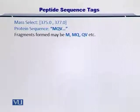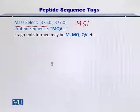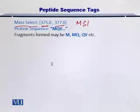Let's look at this example to better understand the peptide sequence tag concept. From MS1, you obtain the intact protein or peptide mass. To further analyze this, you perform a mass selection, which means specifying a mass range — for instance, 375 to 377 Daltons. Any molecules within this range in the mass spectrometer chamber are selected for further analysis, such as MS2 or MS3.